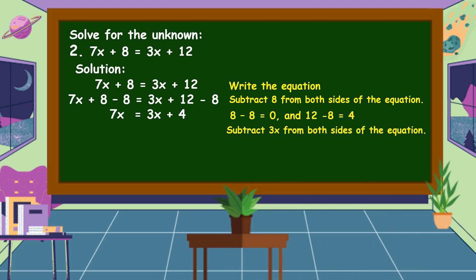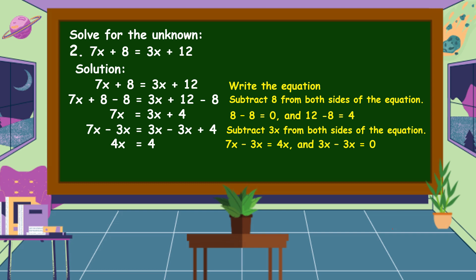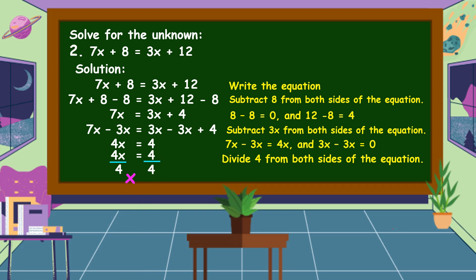Next, subtract 3x from both sides of the equation. 7x minus 3x equals 3x minus 3x plus 4. The remaining items: 4x equals 4. We then divide both sides by 4. 4x divided by 4 equals x, and 4 divided by 4 equals 1. Therefore, the value of the unknown x is equal to 1.